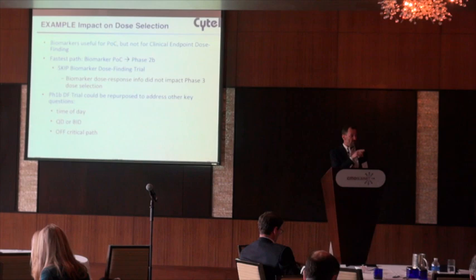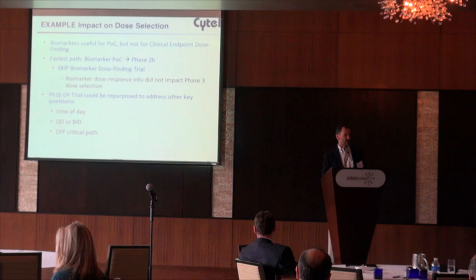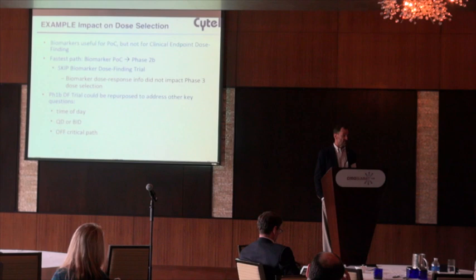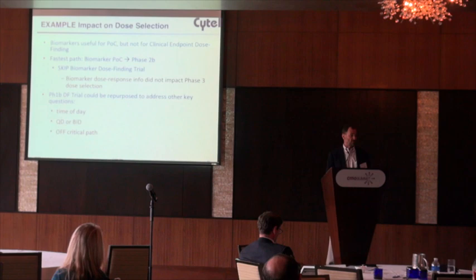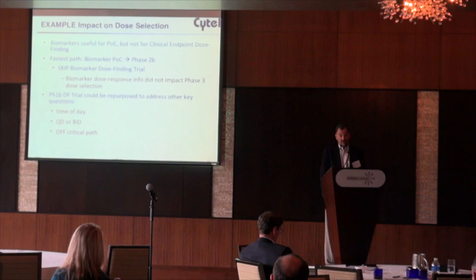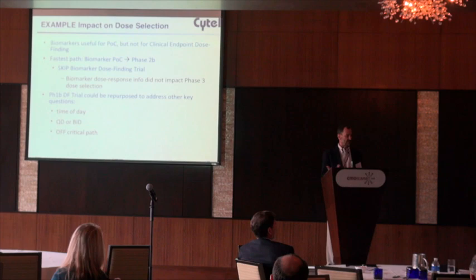What we found in this particular example was that the biomarker trial was very useful for proof of concept, but the dose finding biomarker trial was not useful for improving the probability of picking the right dose. The correlation between the biomarkers and the clinical endpoint was not precise enough to yield a good dose finding decision. This enabled the sponsor to skip that biomarker dose finding trial and go directly to phase two B, repurposing that trial and moving it off the clinical path to gather other information like dosing frequency.